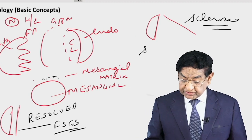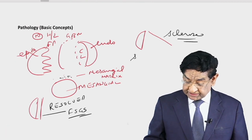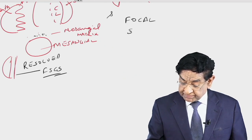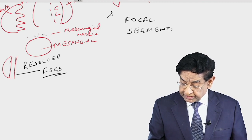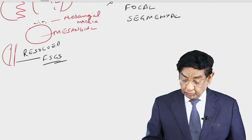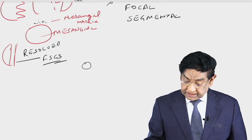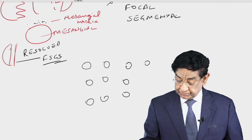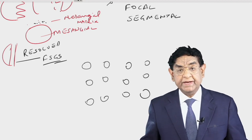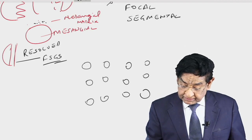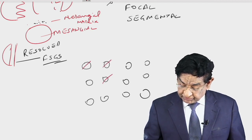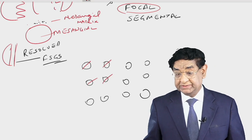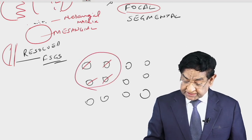Why do we call this condition focal and segmental glomerulosclerosis? We use the term 'focal' because only a few glomeruli are involved out of many — not generalized. Only this part is involved; the rest are normal.